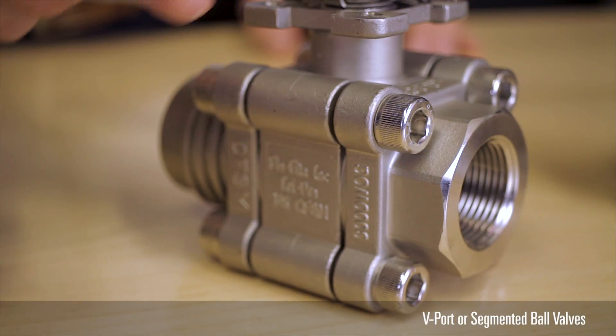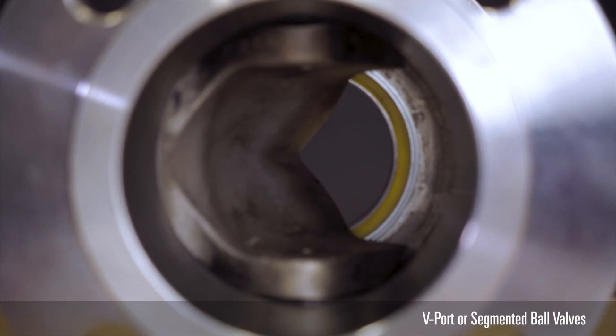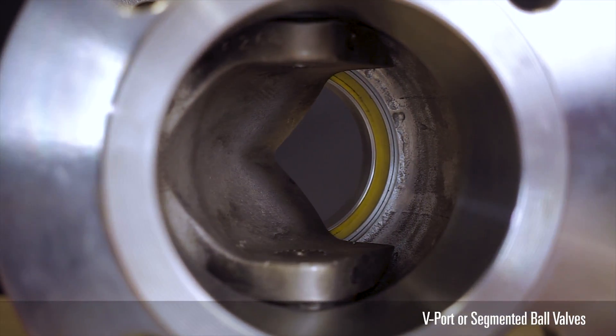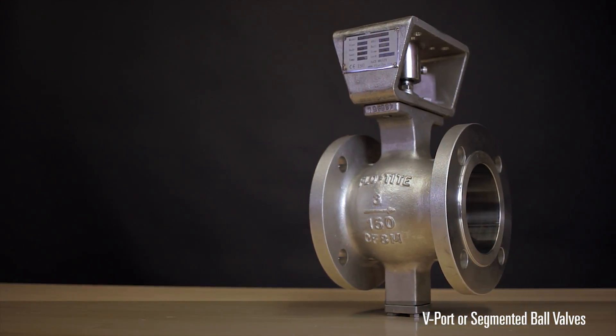Various industries use V-port or segmented ball valves to control flow in modulating applications. Producers use smaller segmented ball valves in upstream applications and larger sizes in midstream applications. Examples include the FlowTite 3-piece ball valve and the FlowTite Sentinel series.